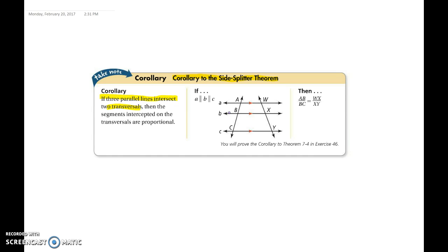And remember, you can create these ratios in different ways than what we have here. It's just being consistent. So they did AB over BC is equal to WX over XY.